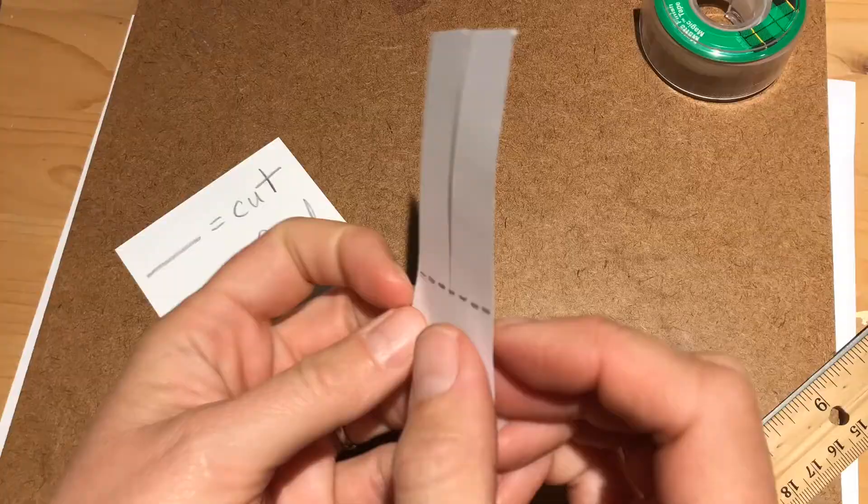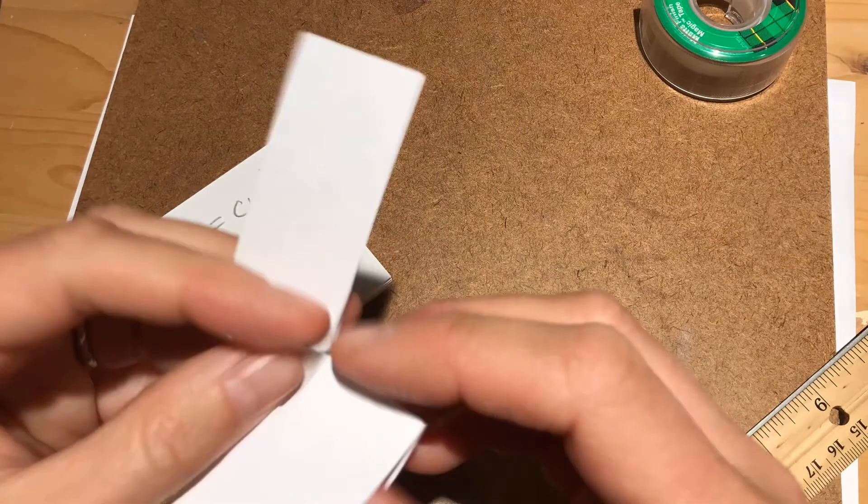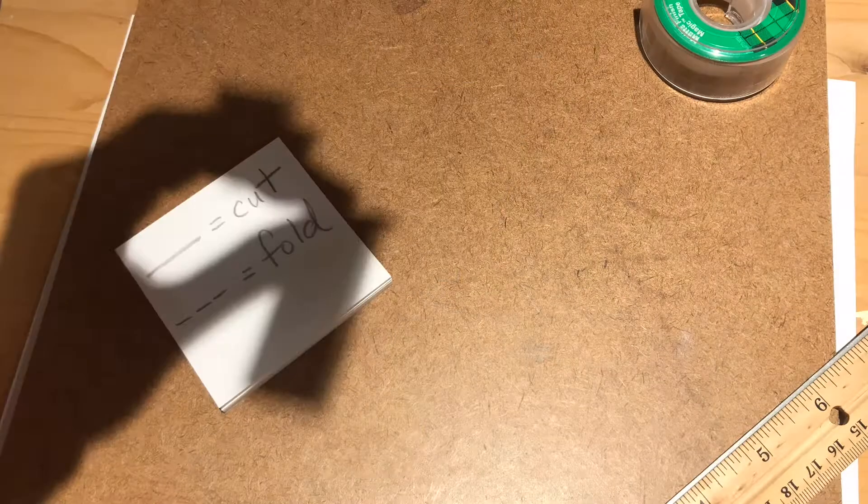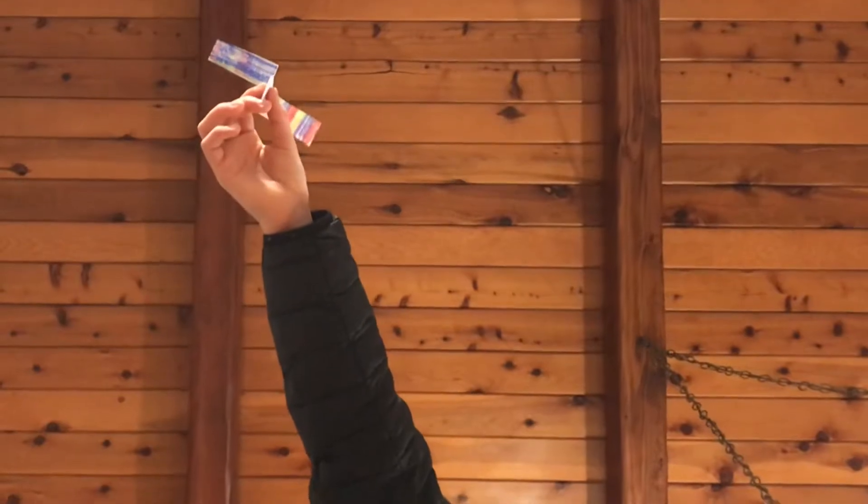Then to make those blades spin, you just fold one forward and one back and you're ready for your test flights. And to do your test flights you'll just get up as high as you can, reach up, let go of the base and see what happens.